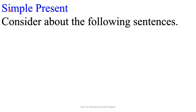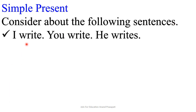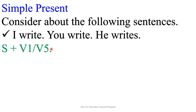Simple present is a kind of present tense. Consider the following sentences: 'I write, you write, he writes.' The structure of the simple present is Subject + V1 or V5. Here, 'write' is the first form of the verb, and 'writes' is the fifth form. Third person singular number needs V5; all others need V1.